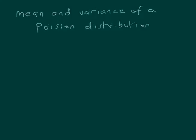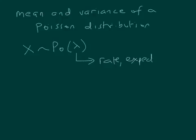This video is about the mean and variance of a Poisson distribution. A Poisson distribution has a parameter lambda, and that value lambda is the rate or the expected value. So the expected value is the mean. This is nice and easy - the mean of a Poisson distribution is lambda.